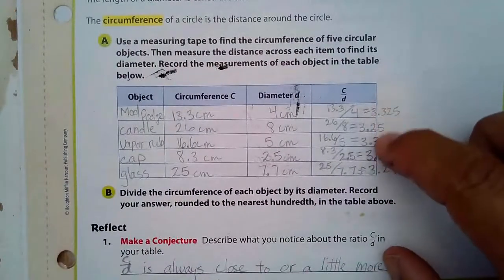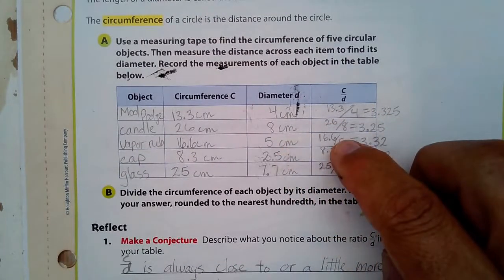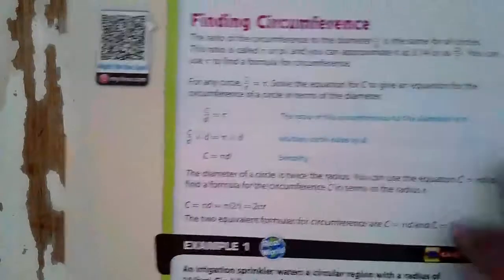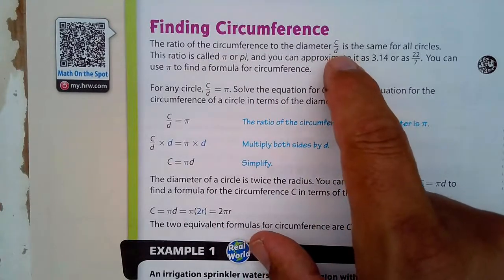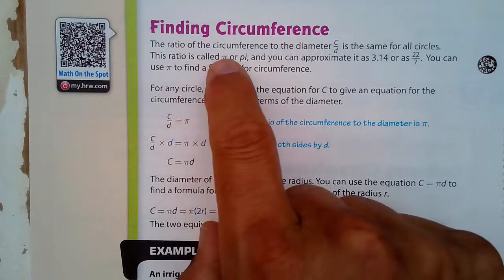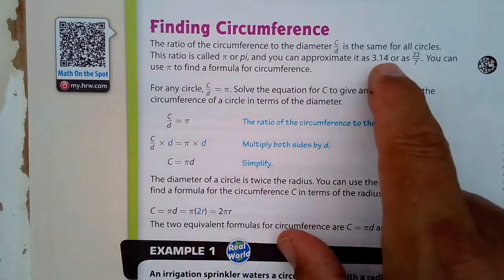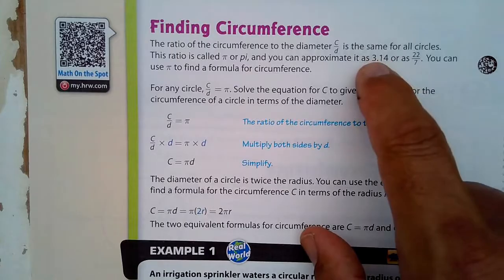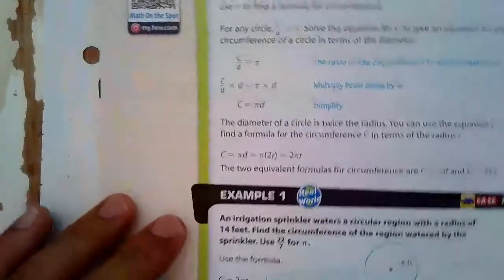That's the key point: it doesn't matter how big or small the circle is — the distance around divided by the distance across is always about the same number. The ratio of the circumference to the diameter, C divided by D, is the same for all circles. That ratio is called pi, and you can approximate it as 3.14 or as 22/7. My measurements were a little over, but if more accurate, they'd be closer to 3.14.